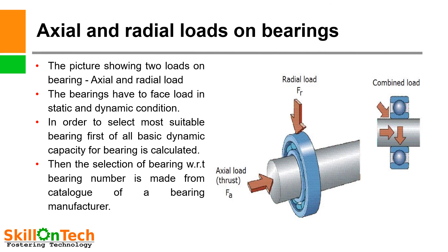Axial and radial loads on bearings. The picture shows two loads on bearings: axial load and radial load. The bearings have to face load in static and dynamic conditions. In order to select the most suitable bearing, first the basic dynamic load capacity is calculated, then the selection of bearing with respect to bearing number is made from the catalog of a bearing manufacturer and procured from a reputed manufacturer.